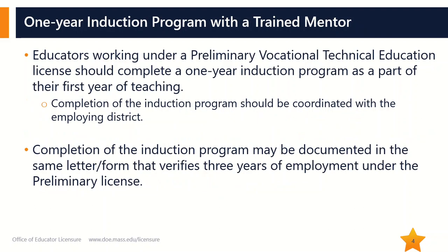Educators who begin teaching under a preliminary vocational technical educator license must complete a one-year induction program with a trained mentor as a part of their first year of teaching. The employing school district will coordinate the induction program with the educator and will assign an appropriate mentor. Completion of this program may be documented in the same letter that verifies three years of employment under the preliminary license.